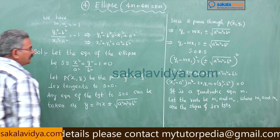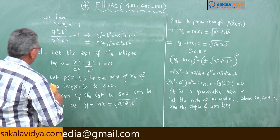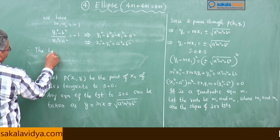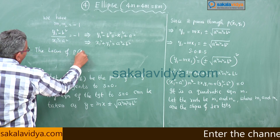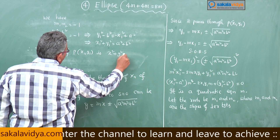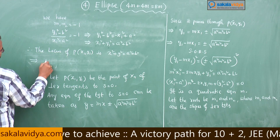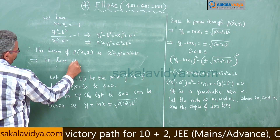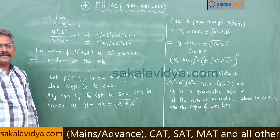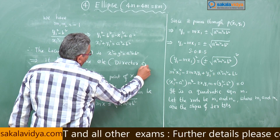It is clear that the point (x₁, y₁) lies on x² + y² = a² + b². The locus of P(x₁, y₁) is x² + y² = a² + b², which represents a circle. This is called the director circle.